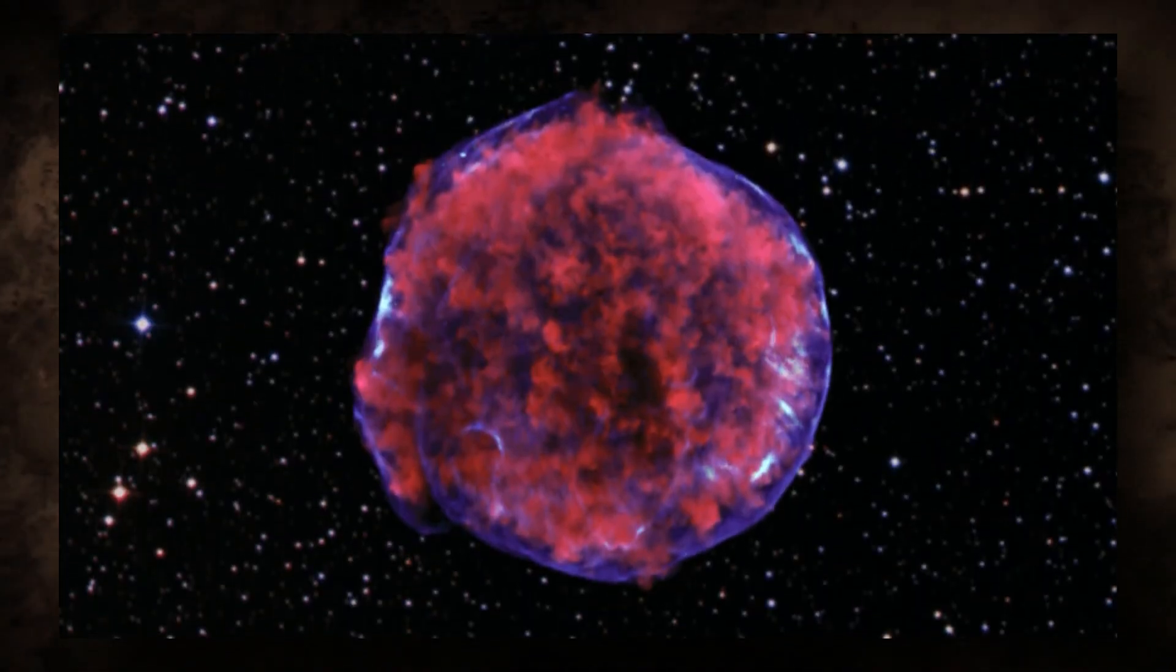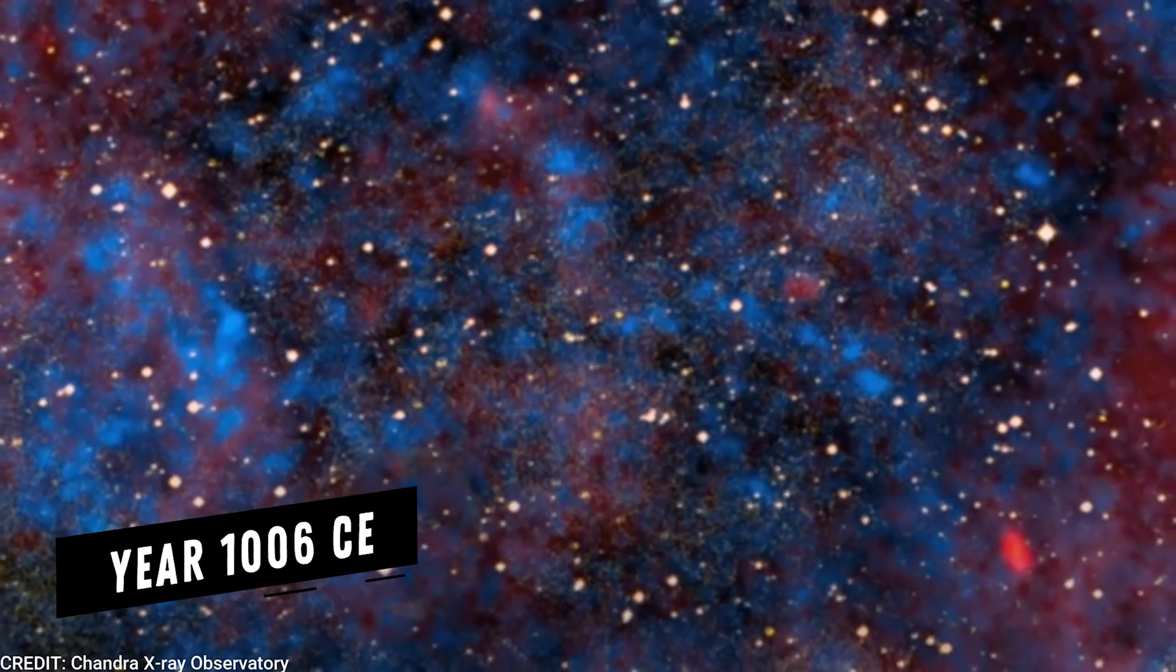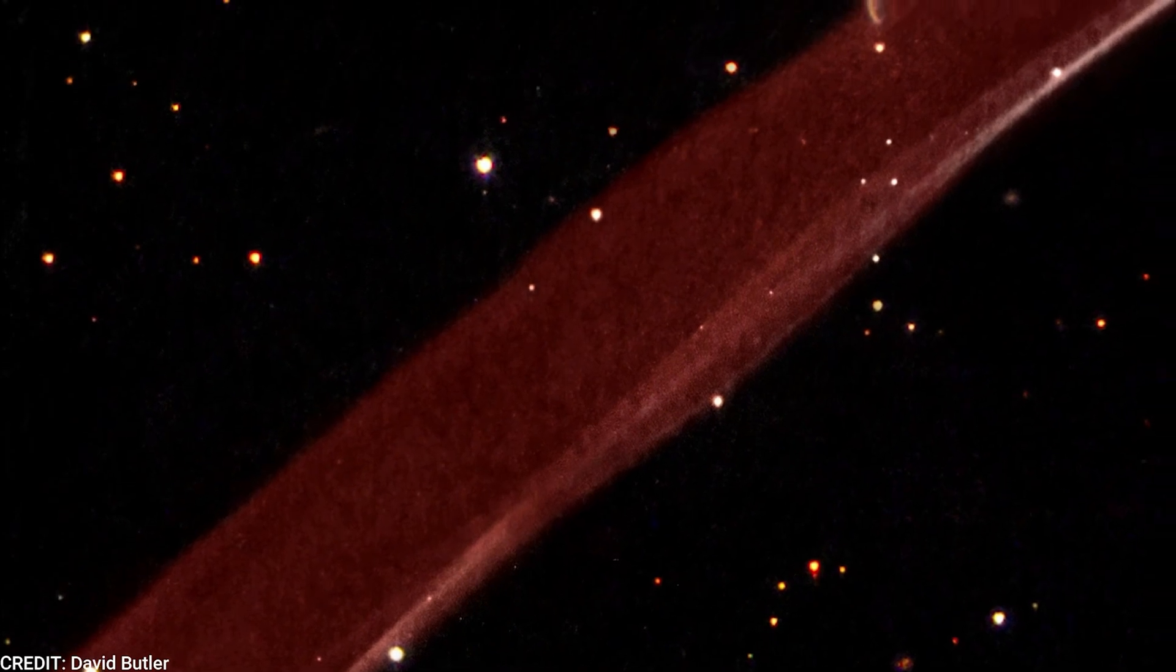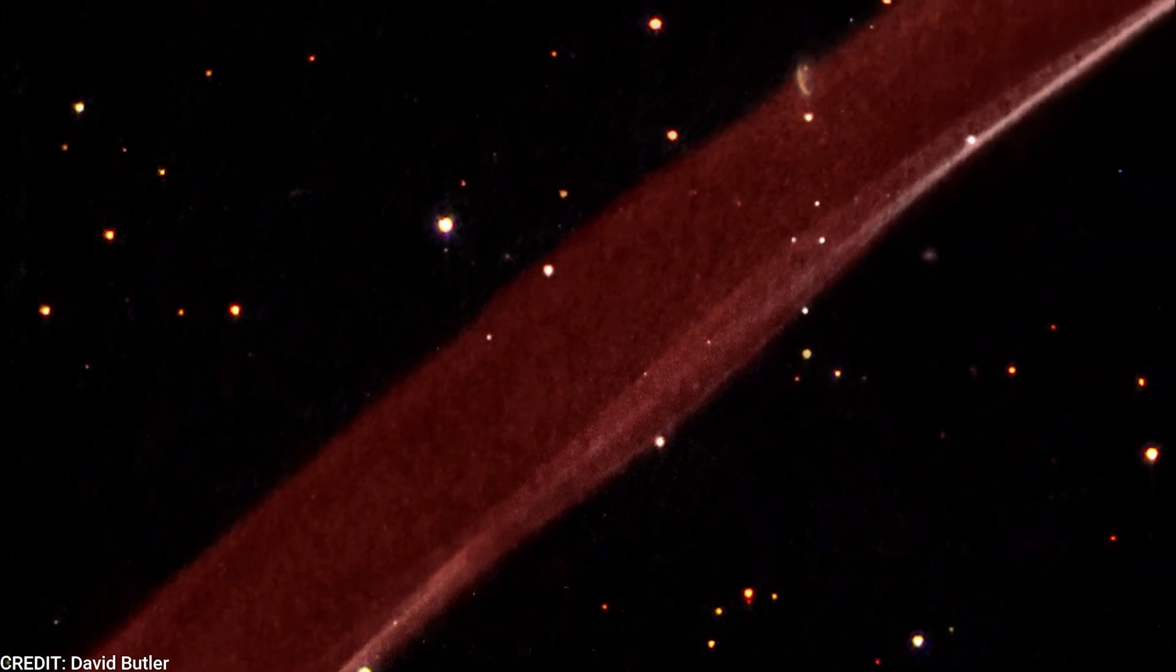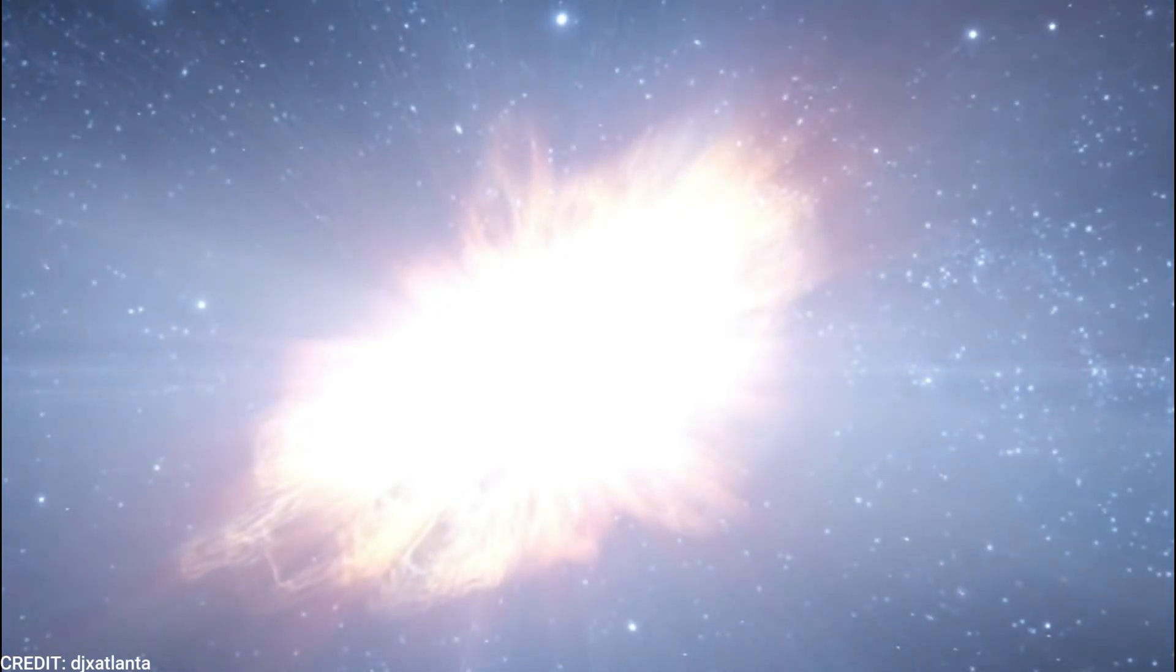The supernova that we now refer to as SN 1006 took place in the year 1006 CE and was so brilliant that it could be seen for several months after it happened. People who lived more than a thousand years ago may have been able to read by the light cast by the supernova, according to the theories of certain scientists and historians.